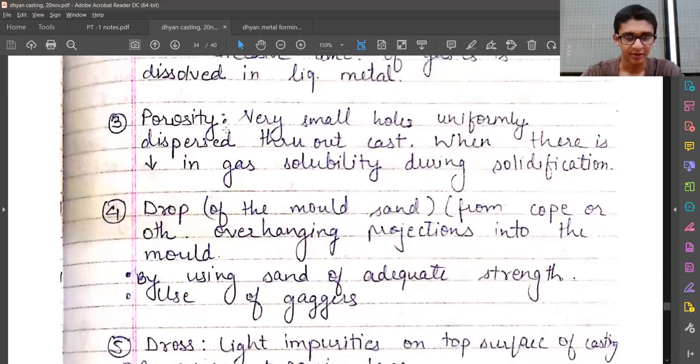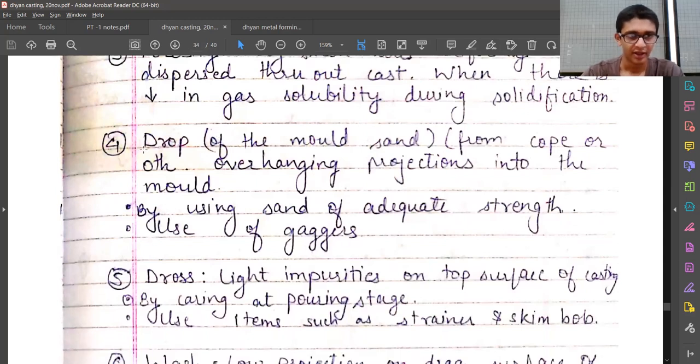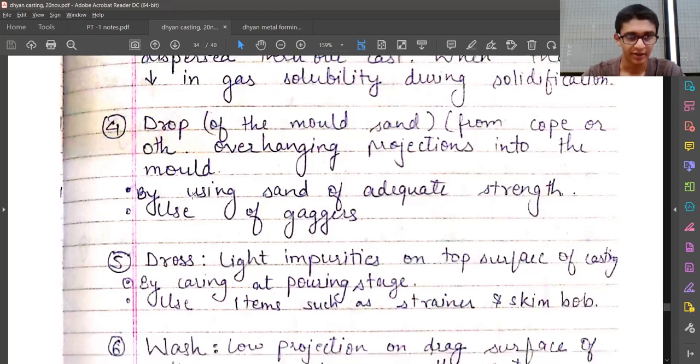The fourth one is drop. Drop of the mold sand from cope or overhanging projections into the mold. The possible remedy is by using sand of adequate strength—the sand would drop only if it is not having adequate strength. So we should have a sand or mixture of sand which has adequate strength that it can hang properly at its place, or we can use gaggers.